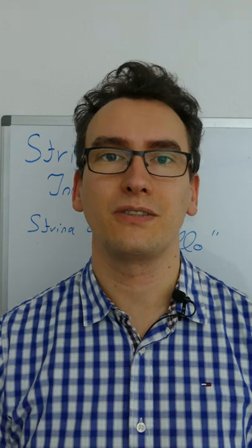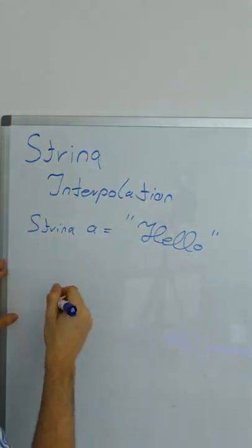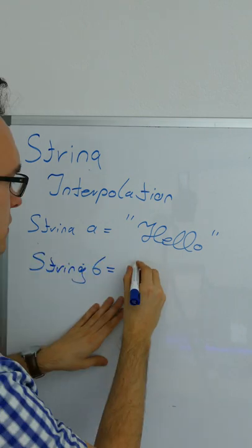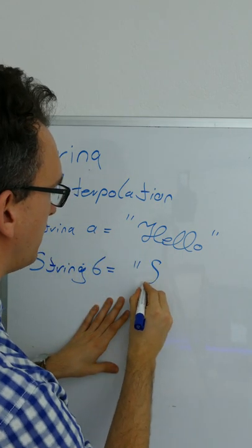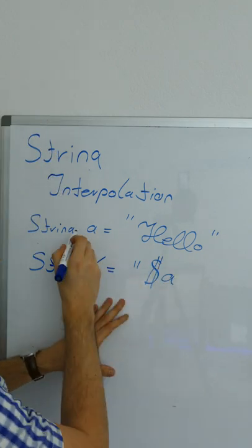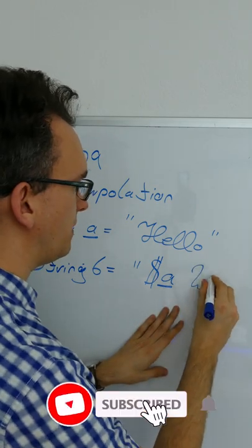The last possibility is string interpolation. That means we already have a variable a and we want to combine it with any other string. So what we can do is use a dollar sign in Dart with the variable name, and then we say 'world' after it.